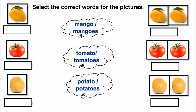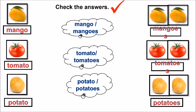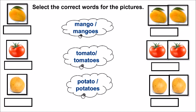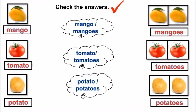Some singular nouns ending with O also take ES to form their plural. Let's try a small activity. Select the correct words for the pictures. Now let's check the answers: mango → mangoes, tomato → tomatoes, potato → potatoes.